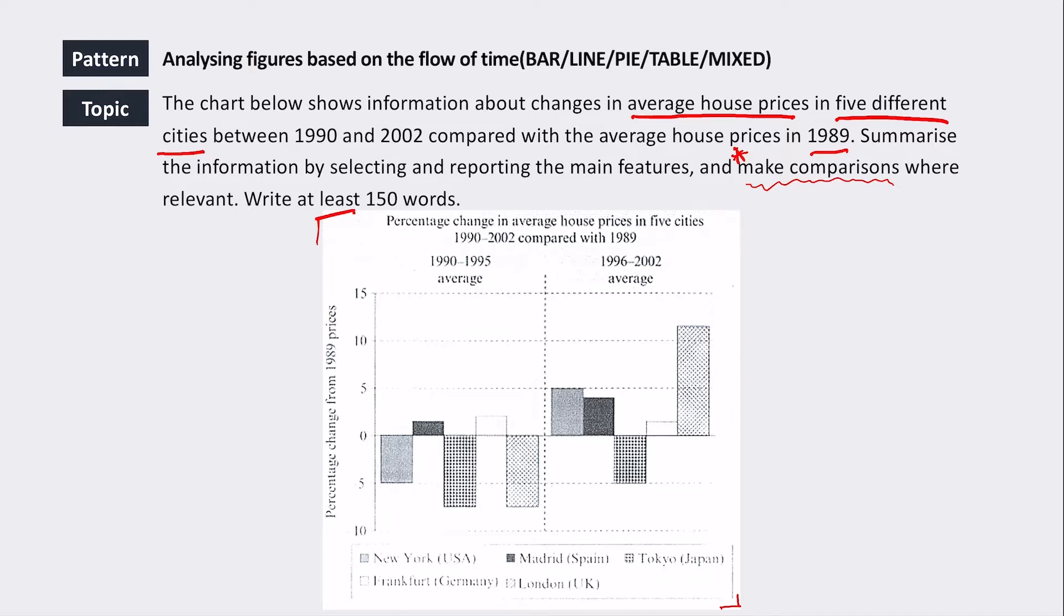So let's take a look at this graph. We can see that we've got a percentage change in house prices. So we've got two sides of the graph. We've got the percentage change - how much it increased or decreased compared to 1989. So we've got a zero here. If it's on a zero, it means that the house price is exactly the same as 1989. So we can see here that New York, the house price got cheaper. In Spain, the house price got more expensive. In Tokyo, it got cheaper. And then in Germany, it got more expensive. And in London, it got cheaper between 1989 and 1990. So yeah, the average house price is minus or plus.